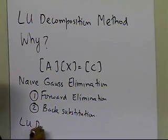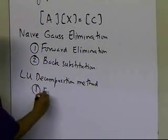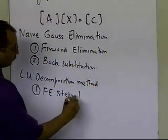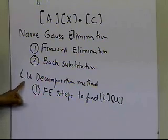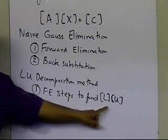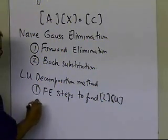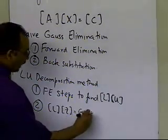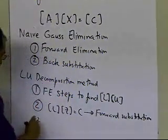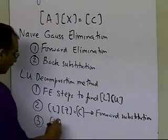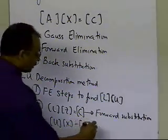Now, if you were doing LU decomposition method, the first step is you will do forward elimination steps to find L times U. In order to do LU decomposition, you have to first decompose your A matrix into L times U, doing the same kind of steps as forward elimination in Naive Gaussian method. Then you have to solve L times z equal to c — that's forward substitution. Third, you have U times x equal to z, and you do back substitution.